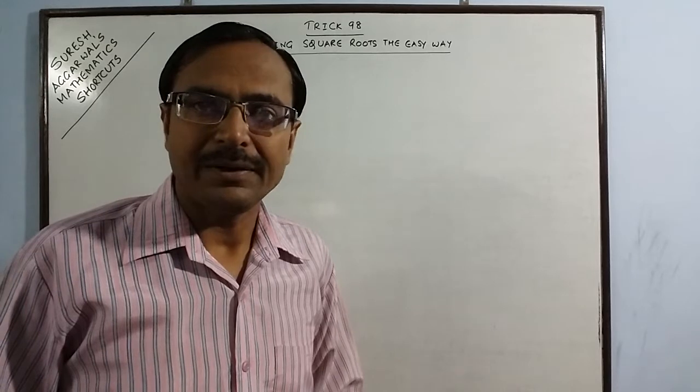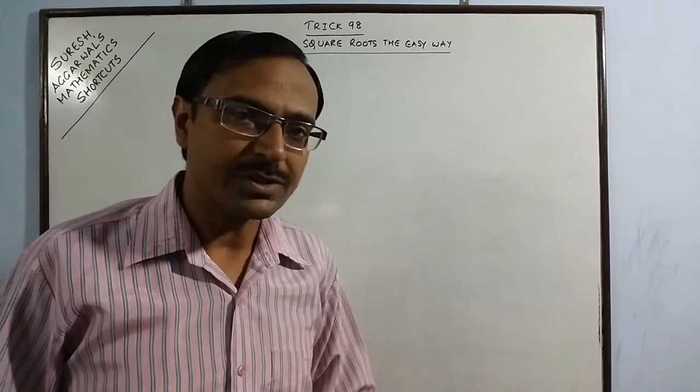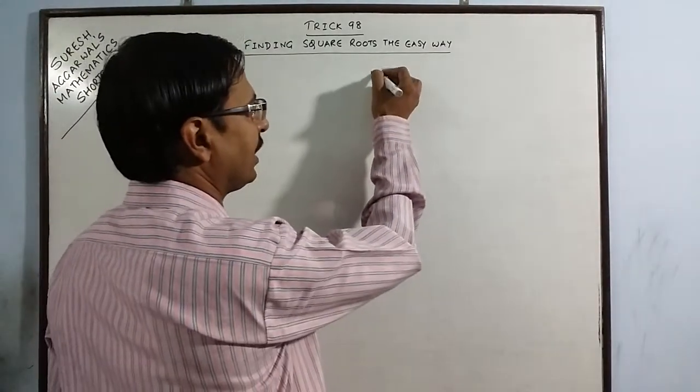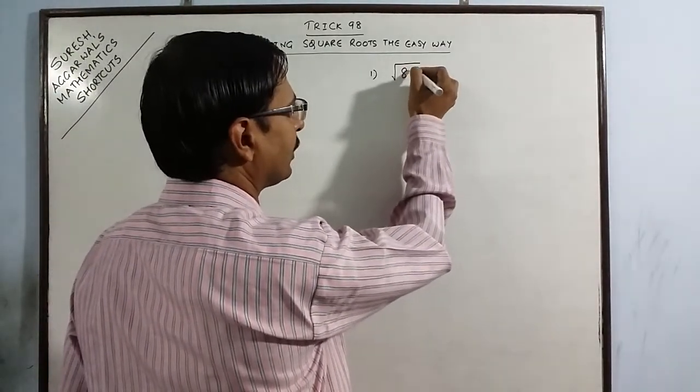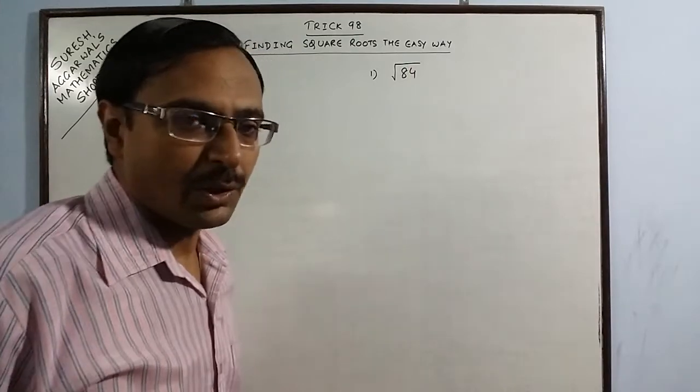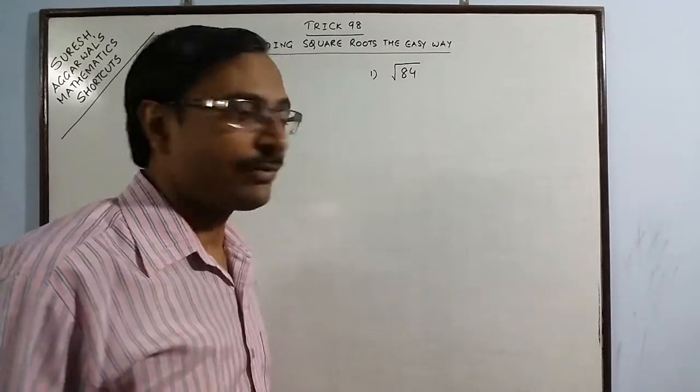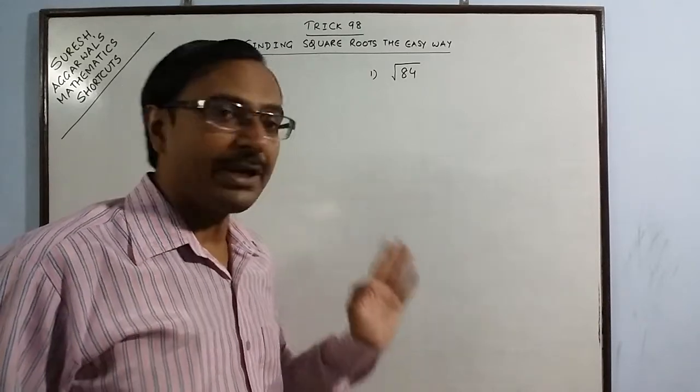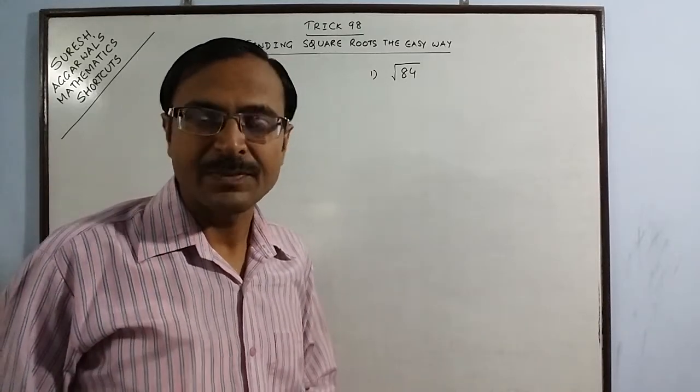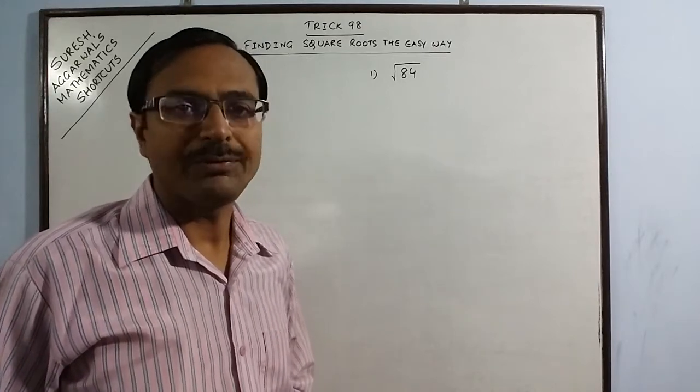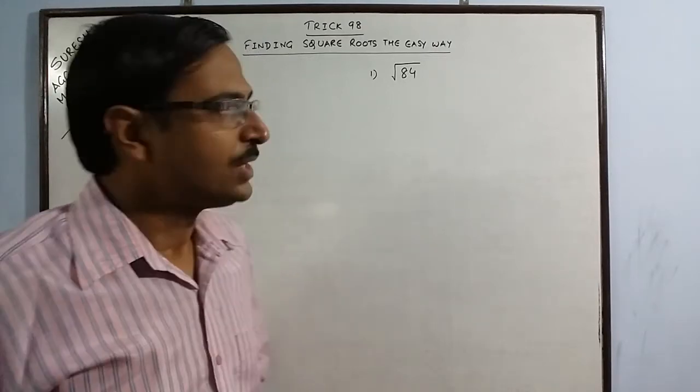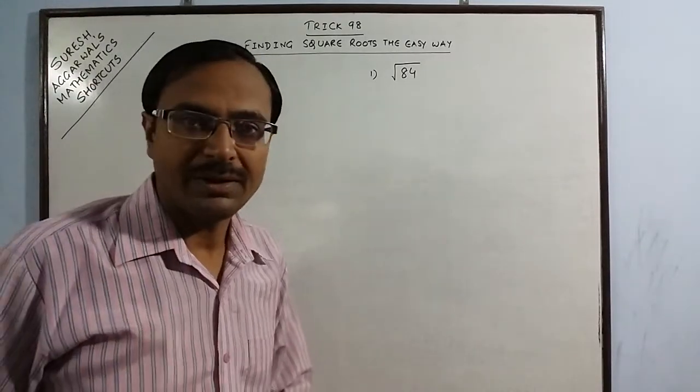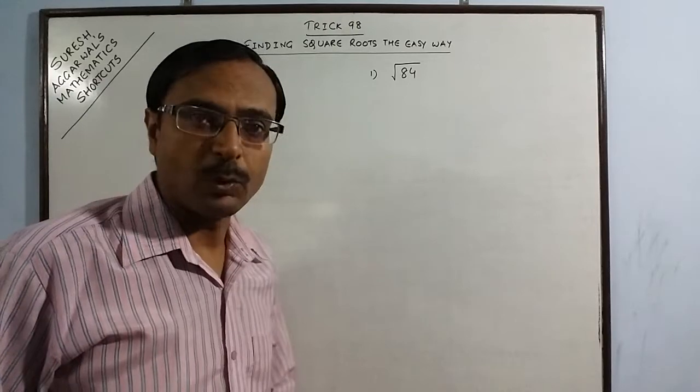Let me tell you that through this method you can find the approximate value of any square root. Say we have under root of 84. 84 is a non-perfect square number. It is not a square of any natural number. So obviously the square root of 84 will be in decimals. So I need to find the approximate value of this square root now. Now for demonstration purpose I am taking a simple number 84. Then I will supplement this with some more examples.